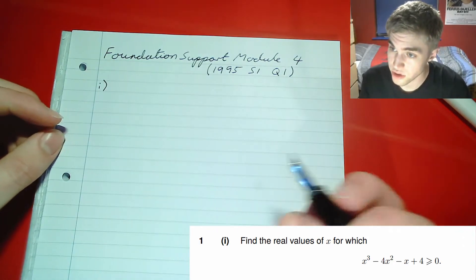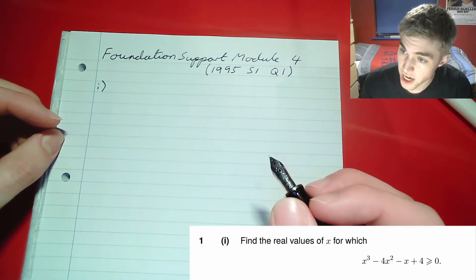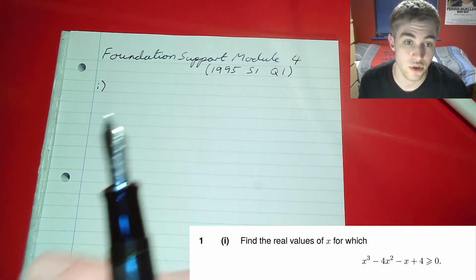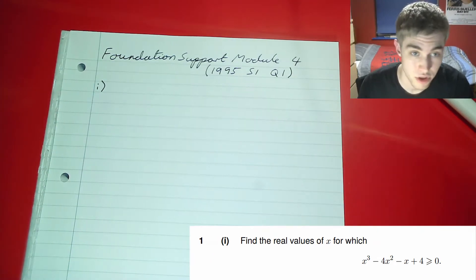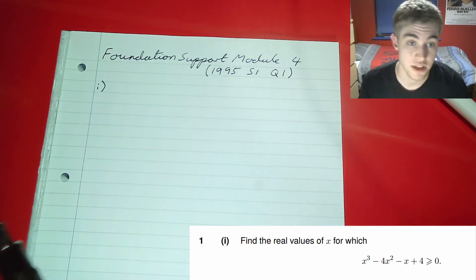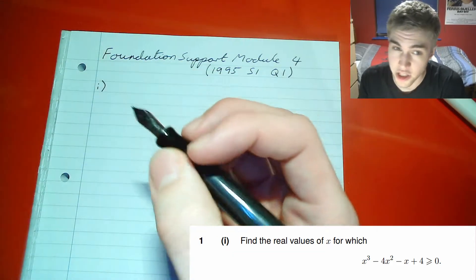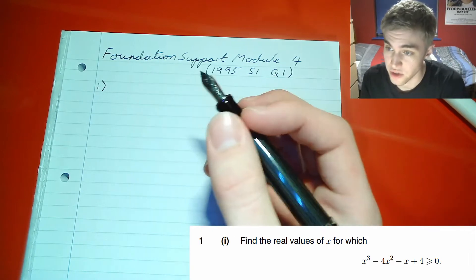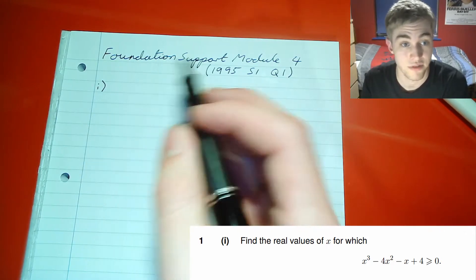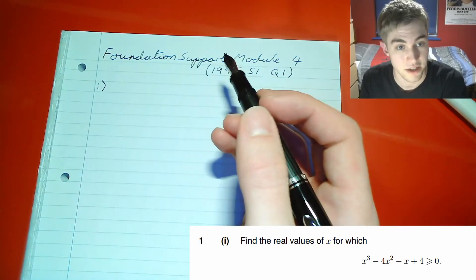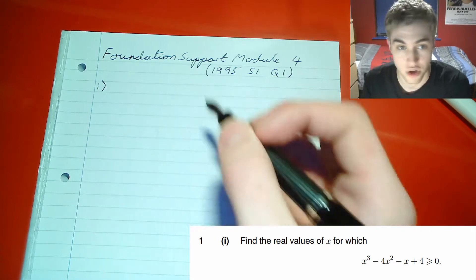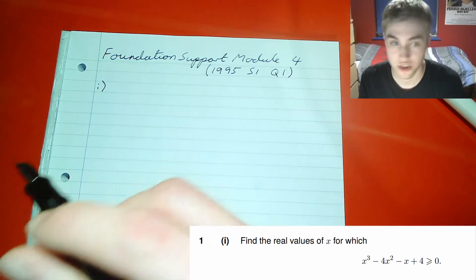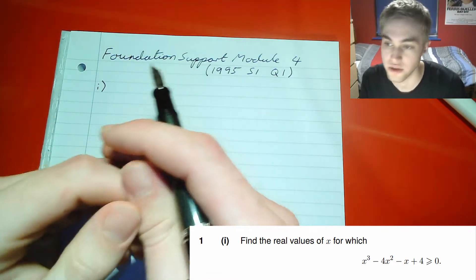We're going to find which values make it equal to zero, and then look at how it interacts with other values to see which ones are greater or less than zero. Because it's much easier to solve a quadratic — using the quadratic formula or completing the square — if we can find one value that solves the cubic, we can factorise that out and get a quadratic, which gives us three values for x.